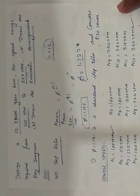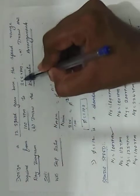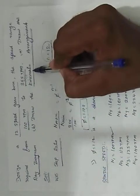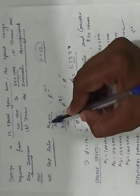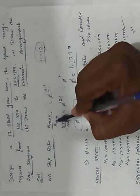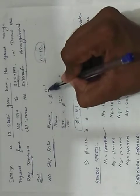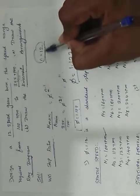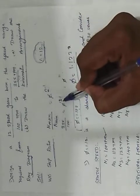Hello friends, in this video we discuss the 12-speed gearbox problem. In the given question, the minimum speed and maximum speed are given; we have to find the ray diagram and kinematic arrangement. The first step is to calculate the step ratio using the formula: φ = (n_max / n_min)^(1/(n−1)), where n is the number of speeds. For a 12-speed gearbox, n equals 12.